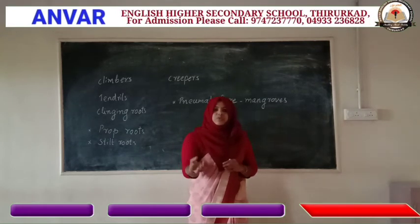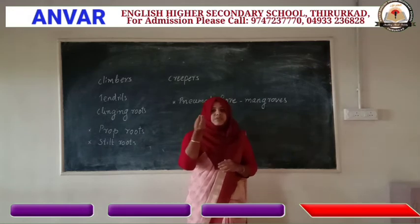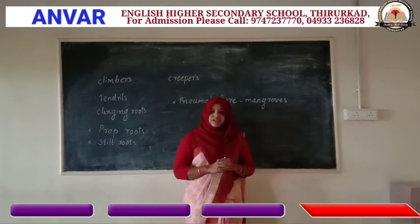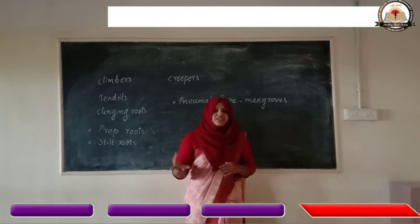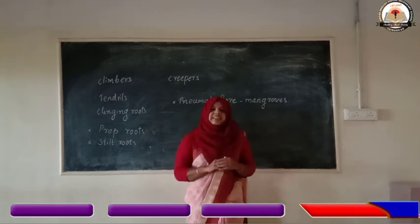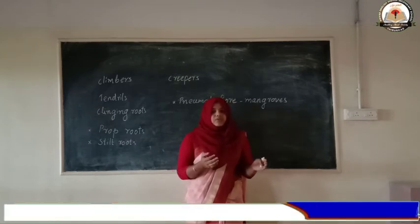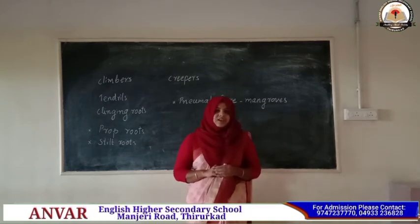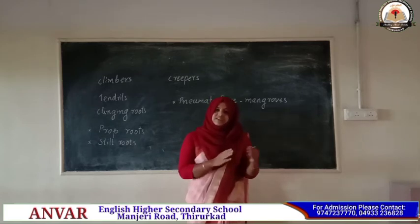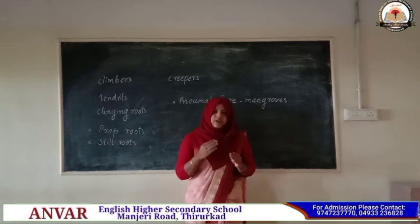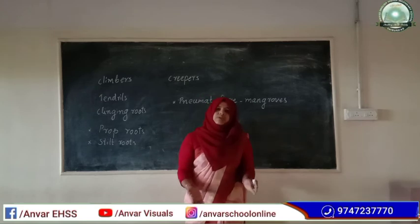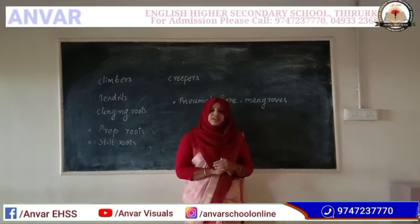When we keep that tuber for some days, if some buds are forming in that tuber, it comes under the group of underground stems. If you keep tapioca for some days, there will not be any new buds. But if you keep potato for some days, new buds will form. So if new buds are forming in a tuber, it is an underground stem. If no buds are forming, it is a storage root.